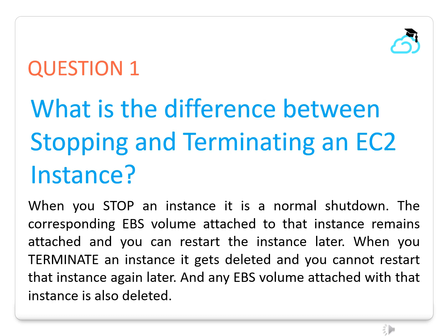Question 1. What is the difference between stopping and terminating an EC2 instance? When you stop an instance it is a normal shutdown. The corresponding EBS volume attached to that instance remains attached and you can restart the instance later. When you terminate an instance it gets deleted and you cannot restart that instance again. Any EBS volume attached with that instance is also deleted.